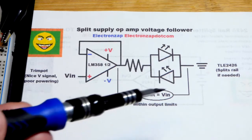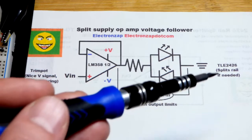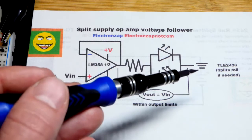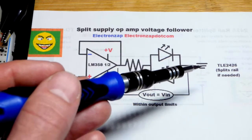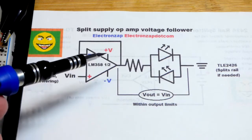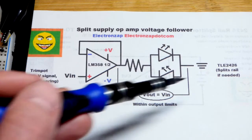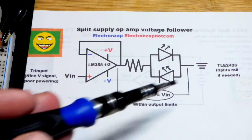We're going to split the rail with the TLE2426, it's going to take the supply voltage and output half of that voltage. So one rail will be more positive than our new ground and one rail will be more negative than our ground right there.